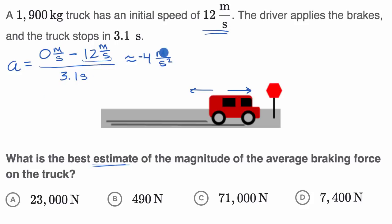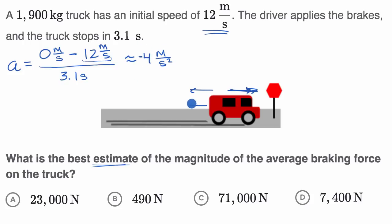Now we use Newton's second law to find the magnitude of the braking force. It makes sense that the acceleration is negative — the velocity is in one direction, but the acceleration is in the other direction because the truck is slowing down, getting lower and lower velocities. The net force is in the same direction as that acceleration, to the left, so if we put a sign on it, it would be negative. But we just care about the magnitude.